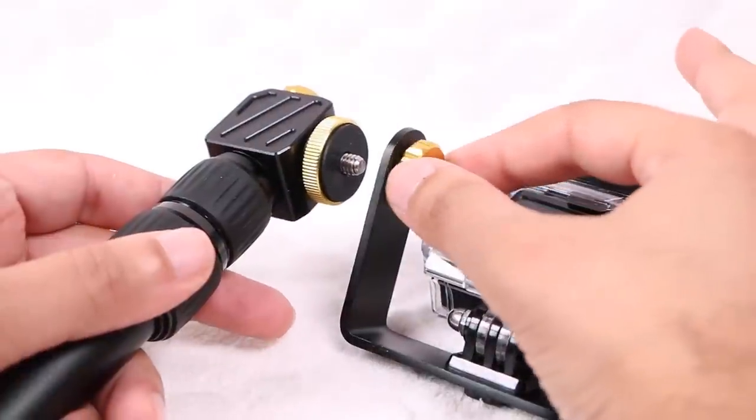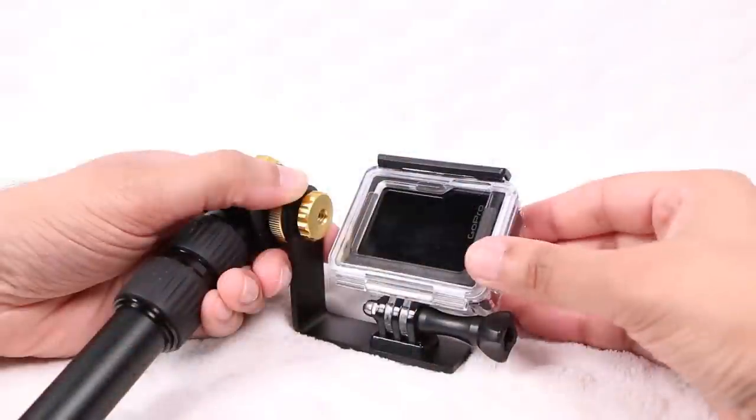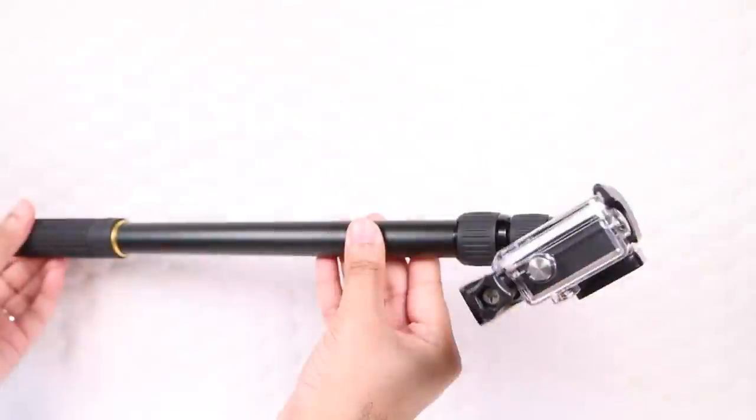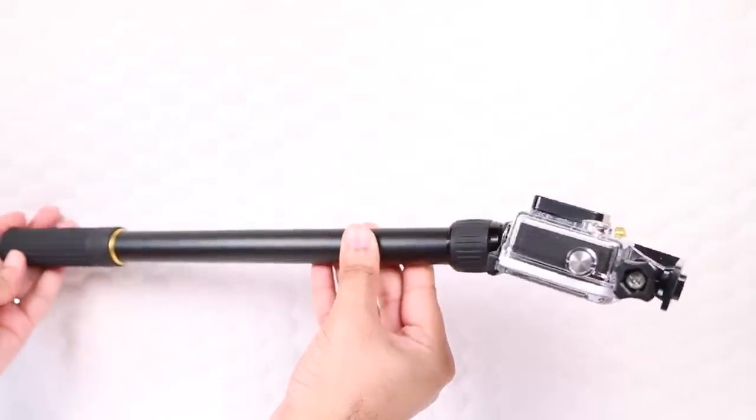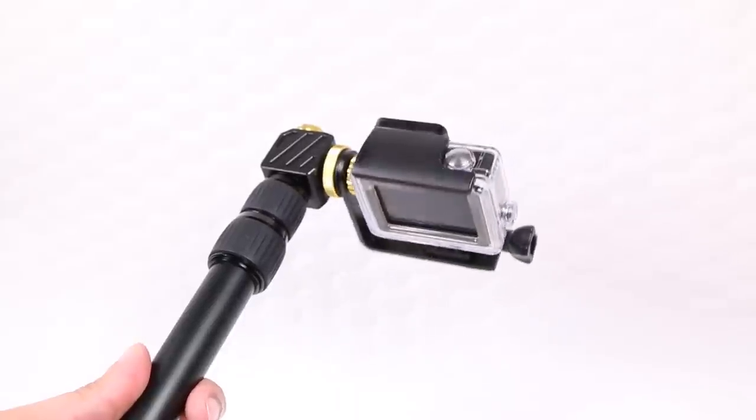Once removed, users are now able to attach this directly to the quarter-inch bolt. Before repositioning the camera, creating the same design, although now allowing users to tilt the camera with the super smooth motion rather than pan.